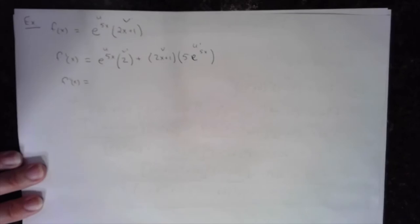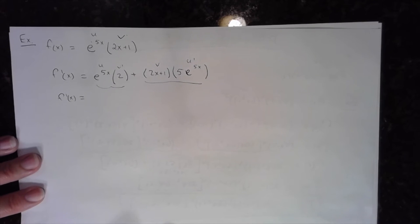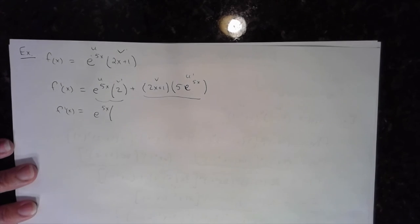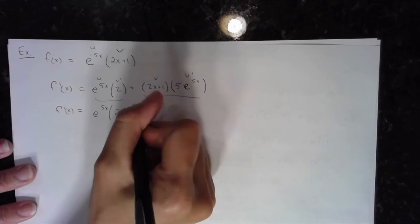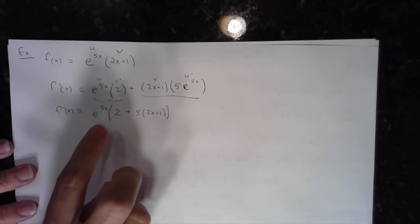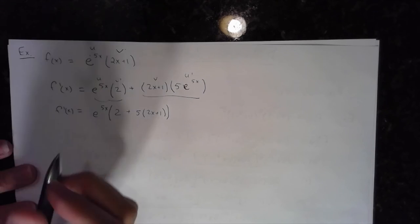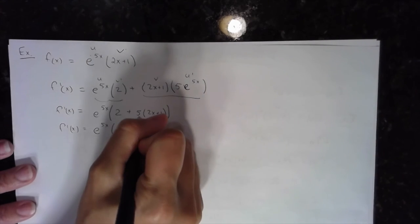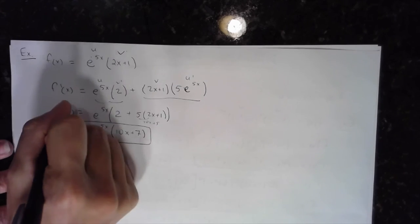So simplifying, there's a GCF here. What do both terms have in common? They both have e^(5x). Taking that out, I'm left with 2 plus 5(2x + 1) inside the bracket. Simplifying further: e^(5x) times — combining like terms — 10x + 5 + 2 gives 10x + 7. So my first derivative is e^(5x)(10x + 7).